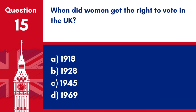Question 15. When did women get the right to vote in the UK? A. 1918. B. 1928. C. 1945. D. 1969. Answer: B. 1928. Women in the UK gained the right to vote on equal terms with men in 1928.